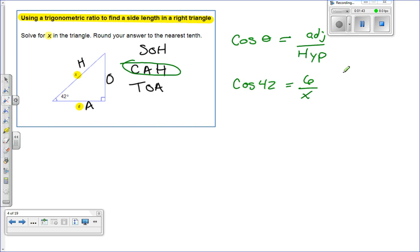If you're trying to solve for x, x is on the bottom. The easiest way to handle this is multiply both sides by x. If you do that, your x's are going to cancel.